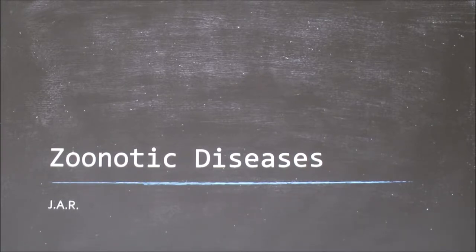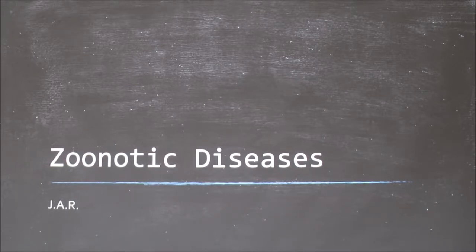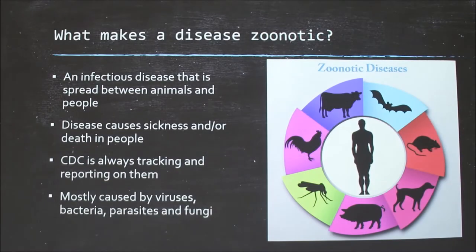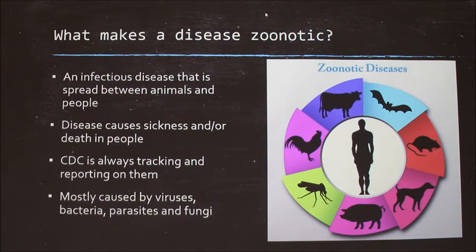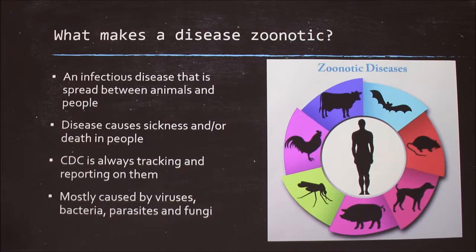So I'm going to talk about zoonotic diseases. This is actually kind of brief because you could do a whole course on this. What makes a disease zoonotic? It means that it is spread between animals and people — the majority of the time from animals to people. It can cause sickness or death if severe, which is why it's tracked and reported by the Centers for Disease Control. It's caused by viruses, bacteria, parasites, and fungi. Here's a nice graphic of some animals that can have a disease and spread it to people.